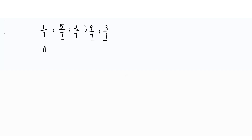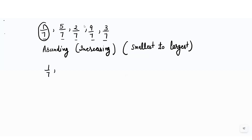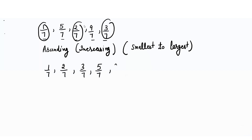So the smallest fraction here is 1/7, then 2/7, then 3/7, then 5/7, and then 9/7. This is how we arrange fractions with the same denominator in ascending order.